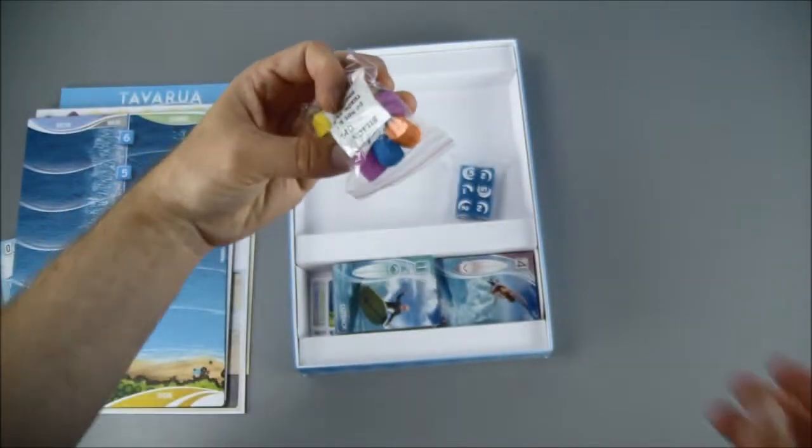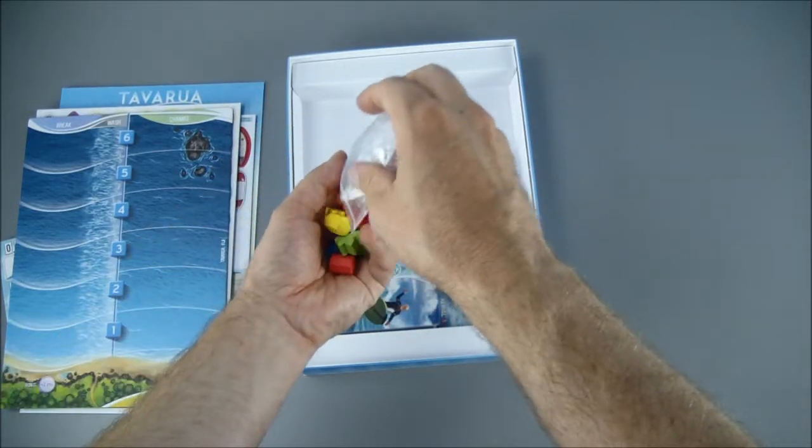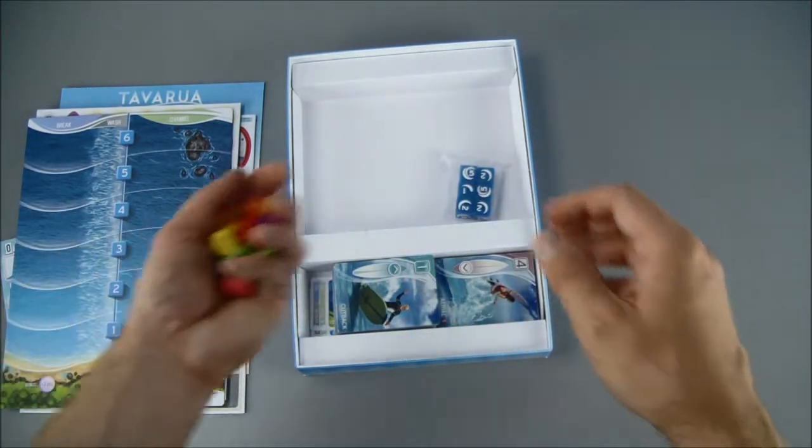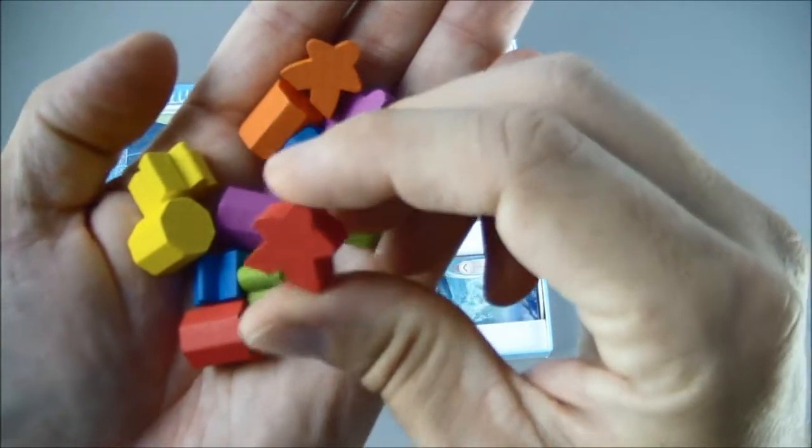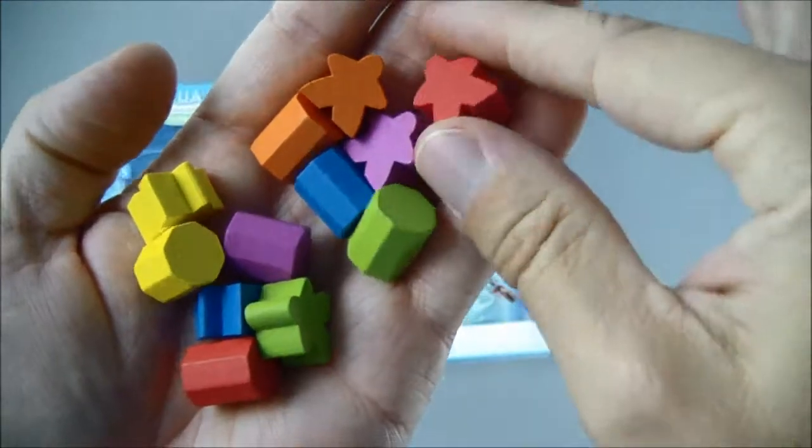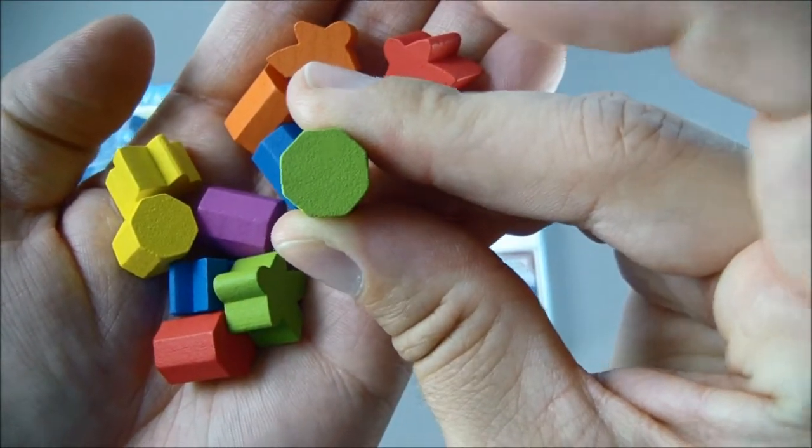And we have wooden tokens. Let's get rid of the silica so I don't accidentally eat it. Got little meeples and octagons.